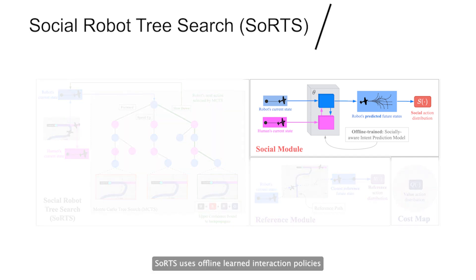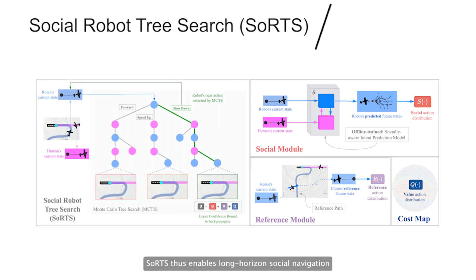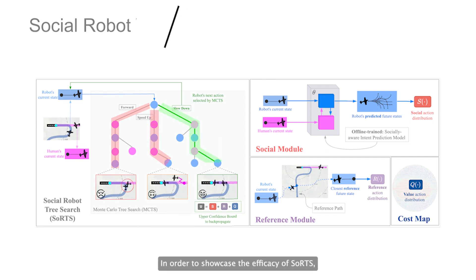SORTS uses offline learned interaction policies on existing trajectory datasets and combines it online with global reference paths and value functions for collision checking. SORTS thus enables long-horizon social navigation by reasoning about different decision modalities. SORTS prunes possible future collisions and socially incompatible trajectories by choosing the most likely outcome.